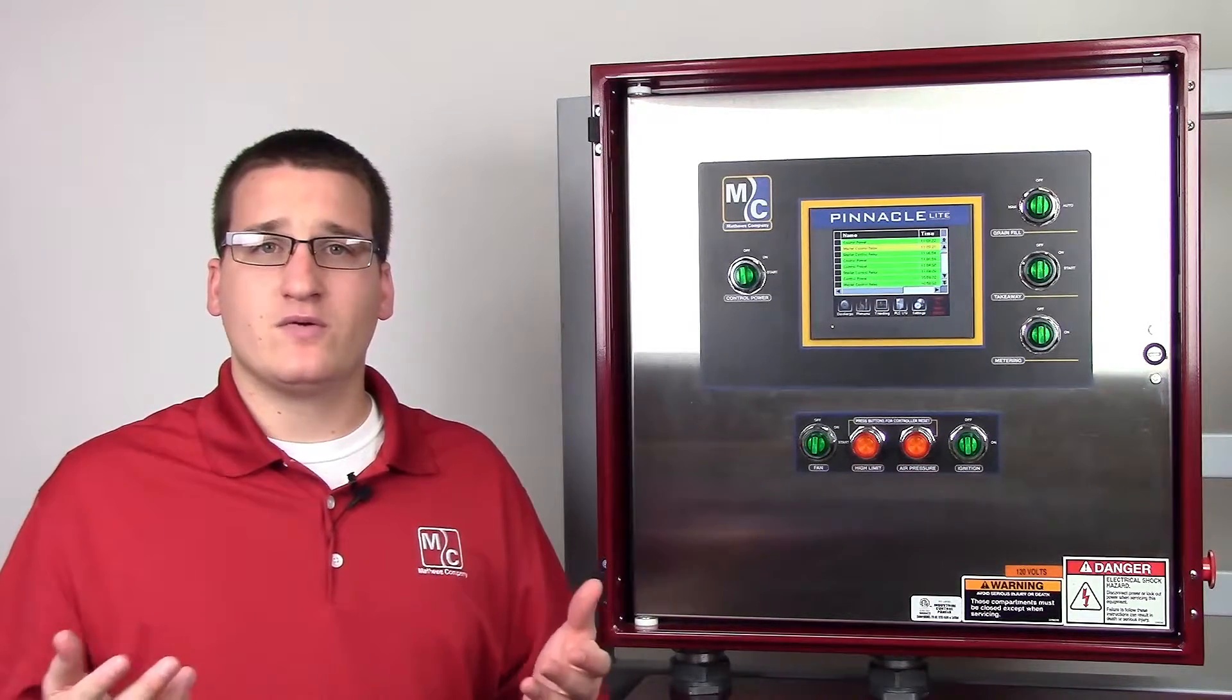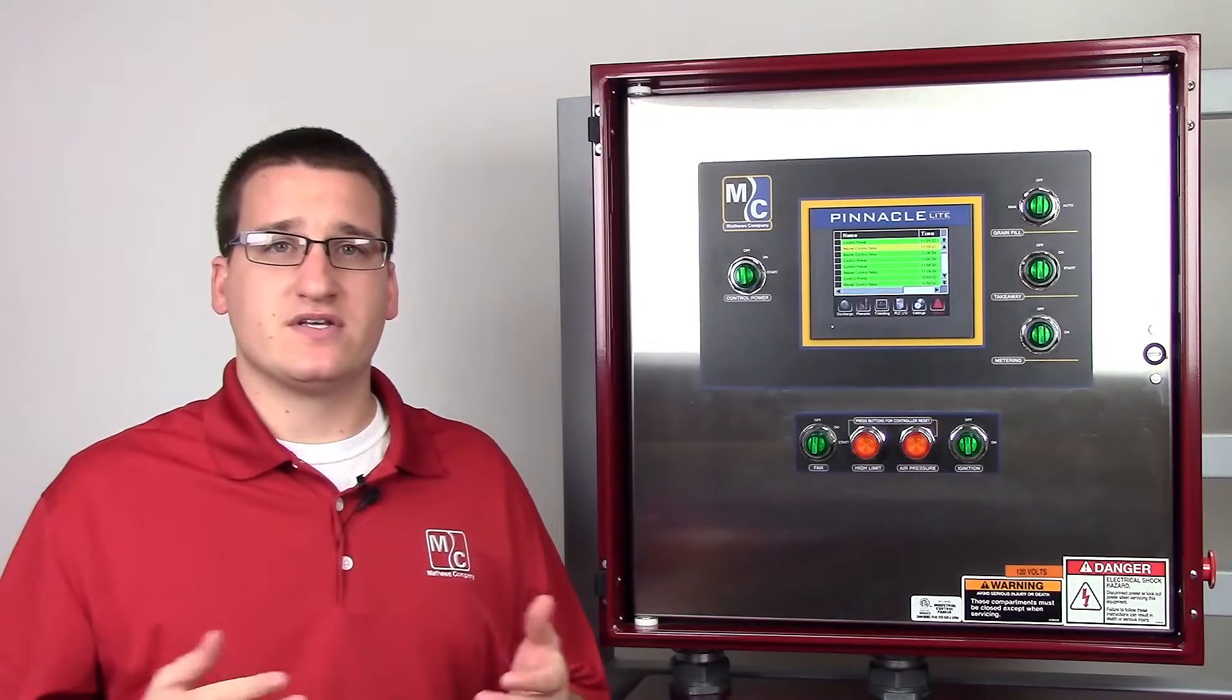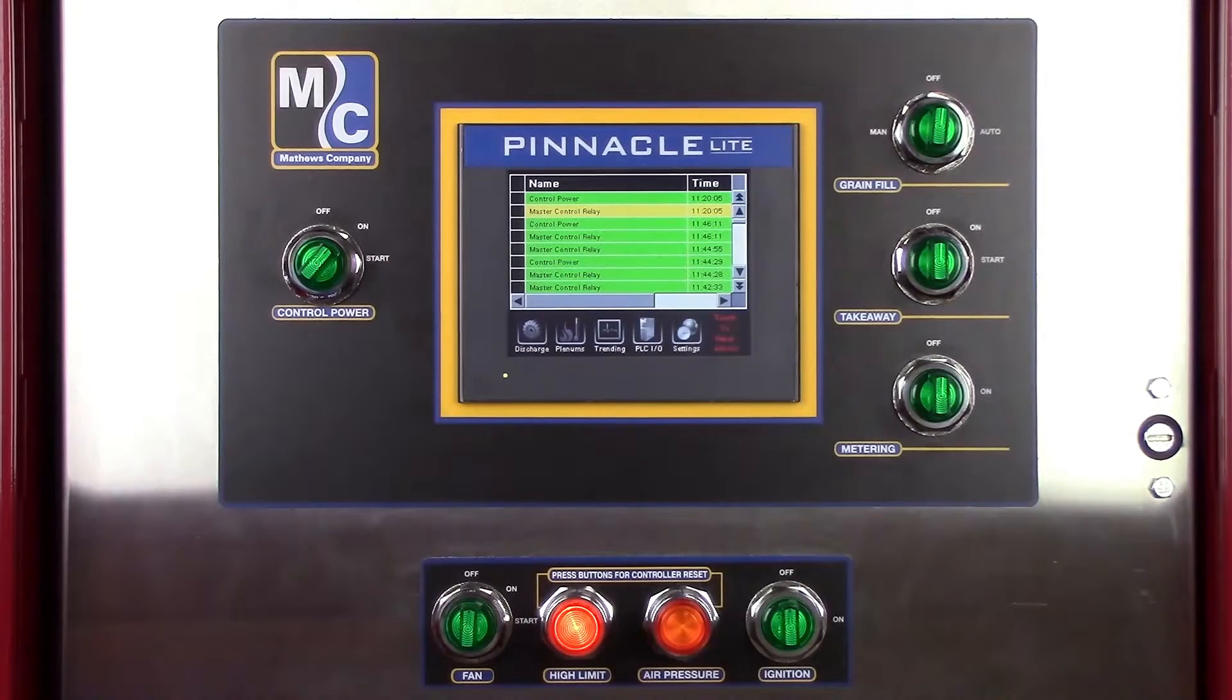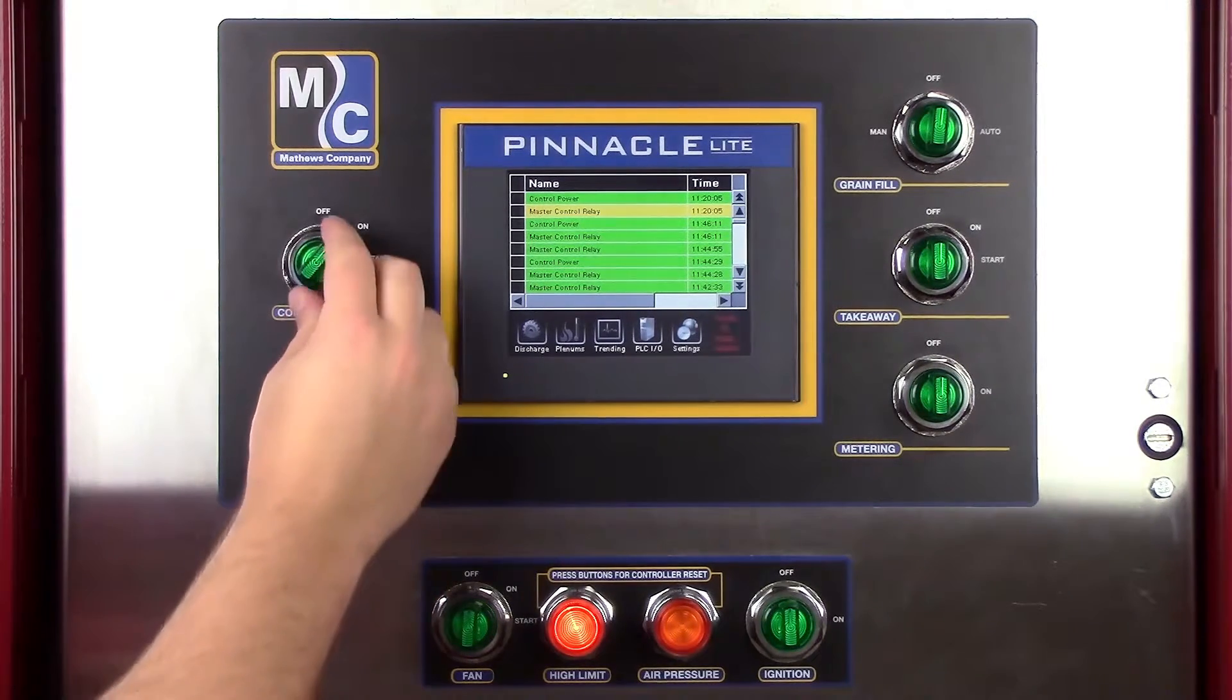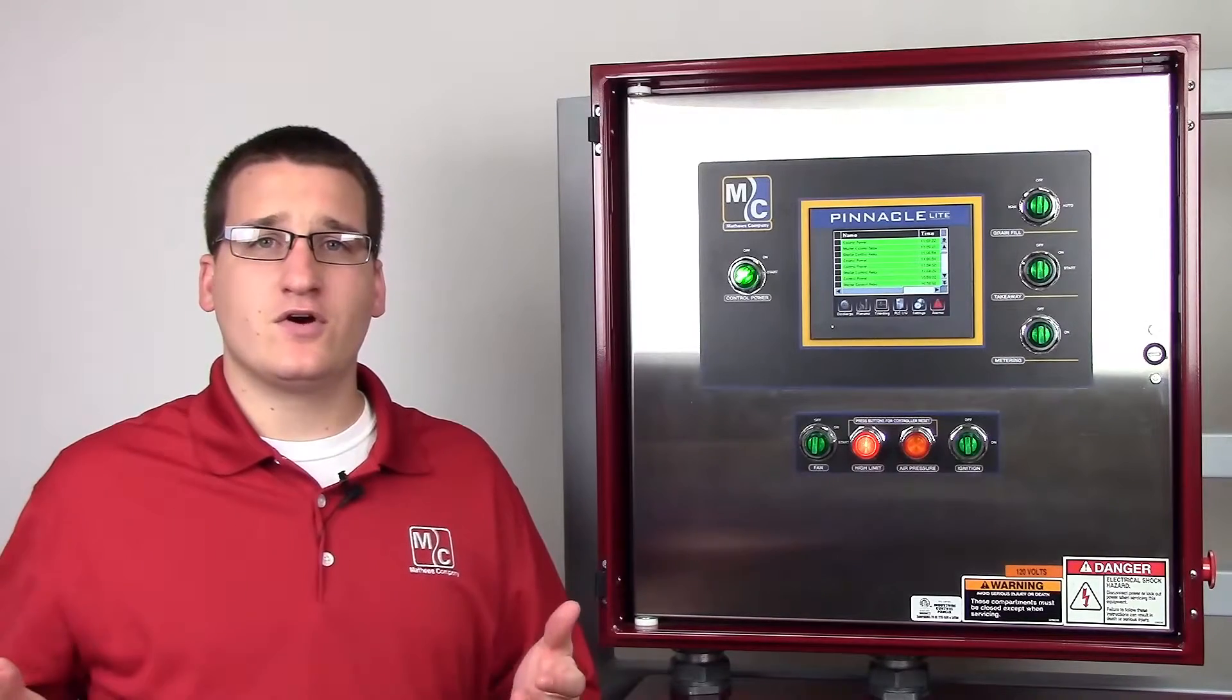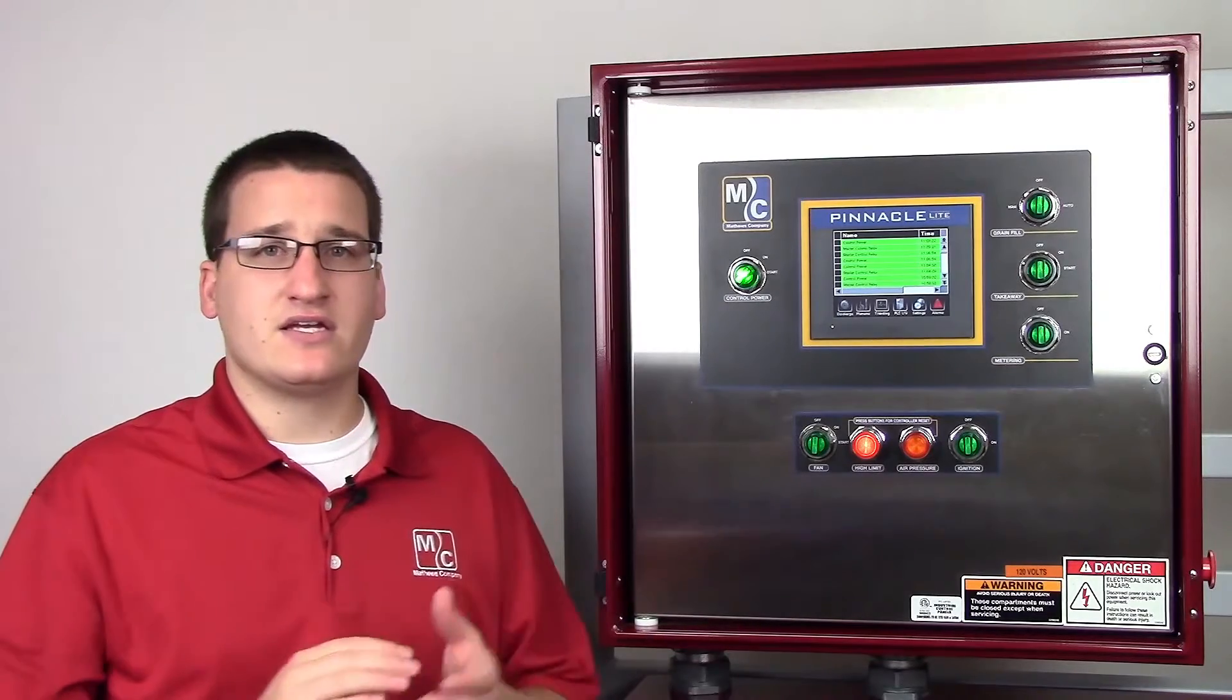This should clear all alarms except for the master control relay. In order to clear this alarm, we'll turn the control power switch to the on position and then momentarily to the start position. You'll know control power is on if the light is illuminated.